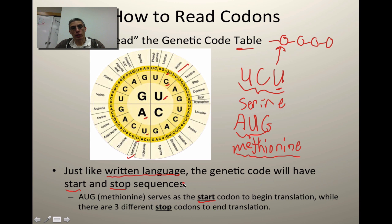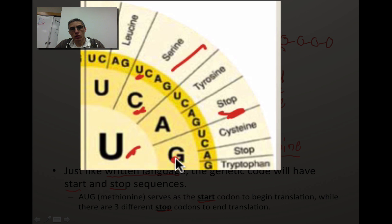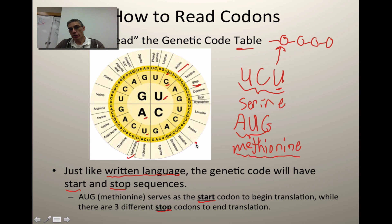There are also what we consider stop codons — we need to know where to end. In our table, UAA is going to be a stop codon, UAG is going to be a stop codon, and there's a third one, UGA, that's also going to be used to stop the decoding sequence. So just like a written language, you need to know where to start and you need to know where to stop.